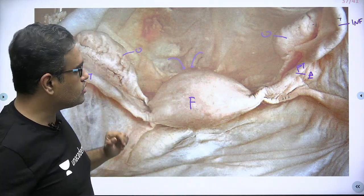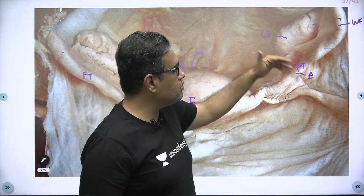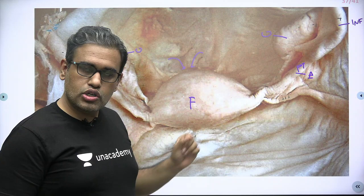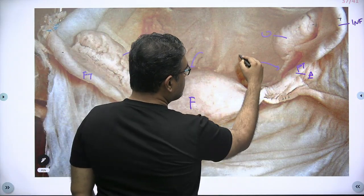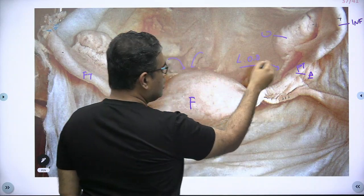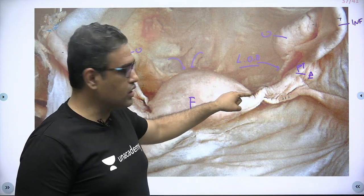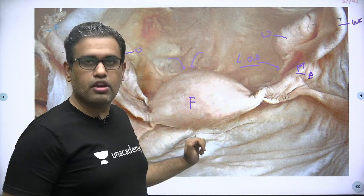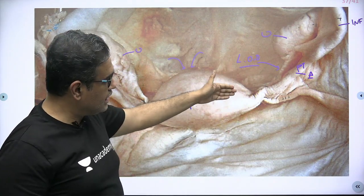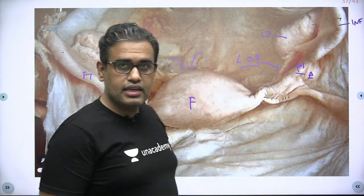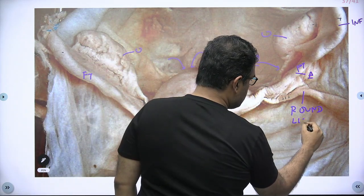Now let us see a few other things. Uterus, fallopian tube, ovary — the ovary is connected to the uterus by the ligament of ovary. You can see this structure over here; that is the ligament of ovary. Now that ligament of ovary goes to the corner of the uterus — the cornu — where the fallopian tube enters the uterus. From the cornu, it continues anteriorly as the round ligament of uterus.